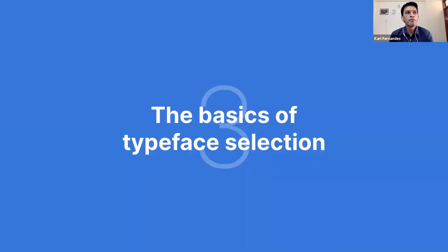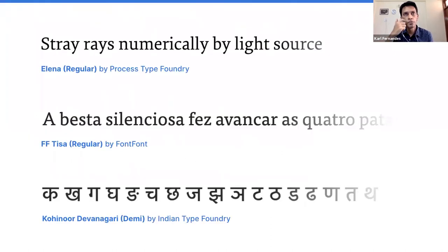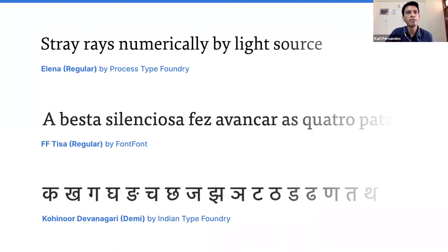Now that we have context about these fonts and hundreds of thousands available at our disposal — how do we actually go about using them? How do we select them? Books have been written on this subject. I'm going to keep it broad, at a high level, in the context of the content web. From my experience: keep it simple and just start off with a body face and a display face. What is a body face? Any typeface designed to work really well at small sizes — 18 to 20 pixels and lower — is a body face.